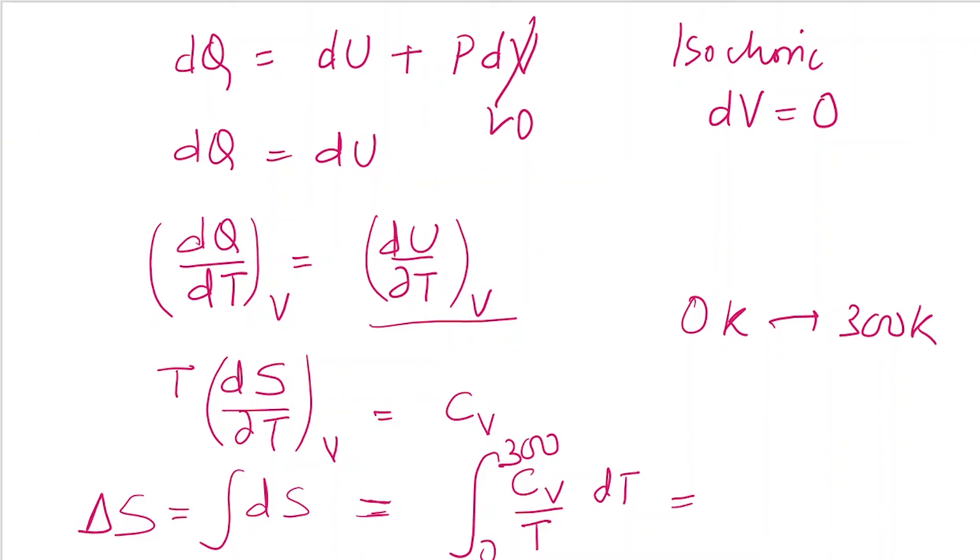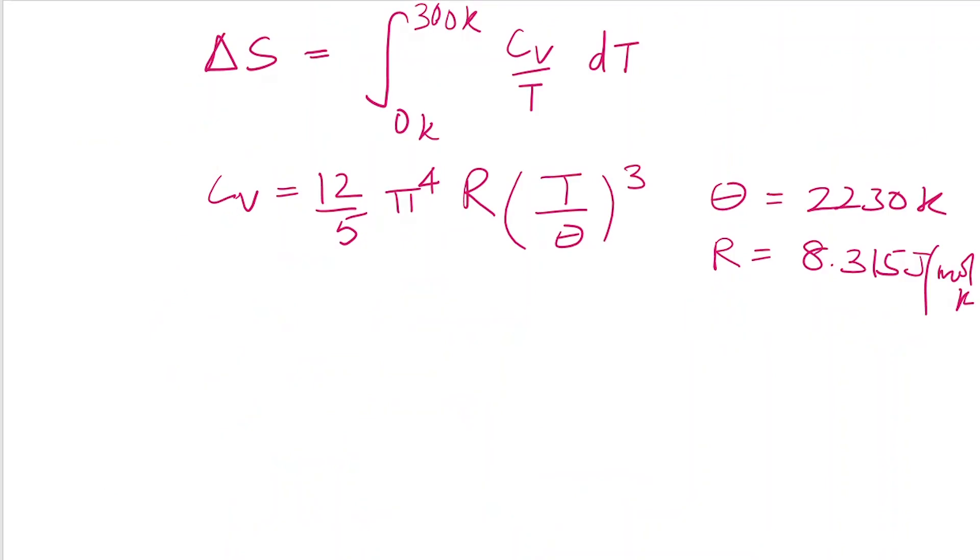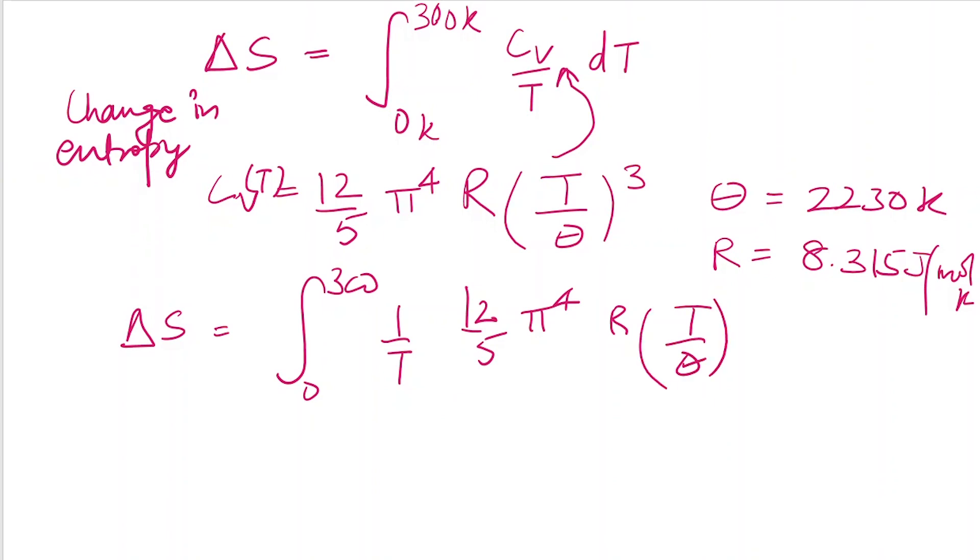Now we can put Cv as a function of temperature. We are given Cv as a temperature function, so we substitute this into the equation. We get ΔS = ∫₀³⁰⁰ (1/T)(12/5)π⁴R(T/Θ)³ dT.